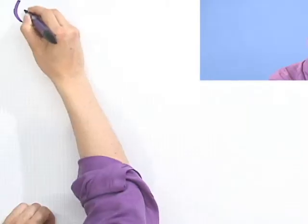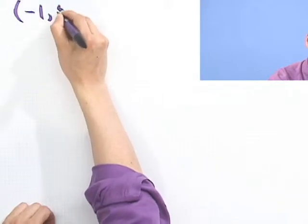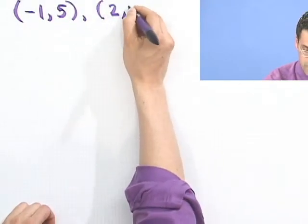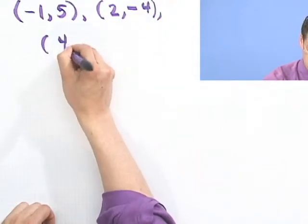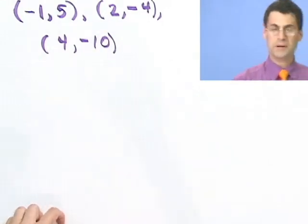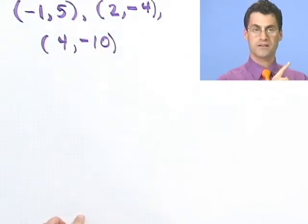Let me ask the following question: are these three points collinear? One of them is (−1, 5), one of them is (2, −4), and one of them is (4, −10). I'm going to plot them in my white box over to my left. They sort of look like they're on the same line, but let's actually verify for sure.